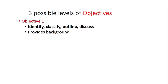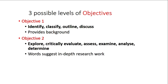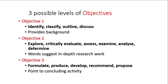There are three possible levels of objectives. The first level could be identifying, classifying, outlining, or discussing theoretical background, theoretical concepts, or phenomena as they are. The second level could start with words like explore, critically evaluate, assess, examine, analyze, or determine. The third level is to formulate a solution, produce or develop a model, recommend something, or propose a theoretical or conceptual model and test it. Make sure your objectives have these keywords or similar ones.